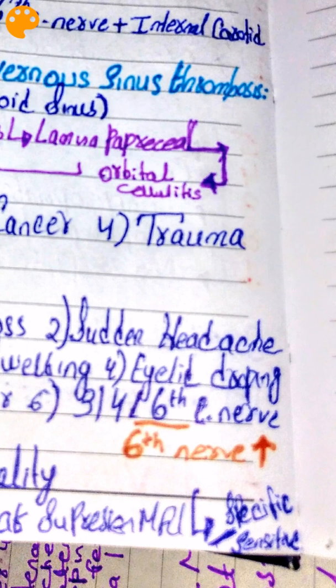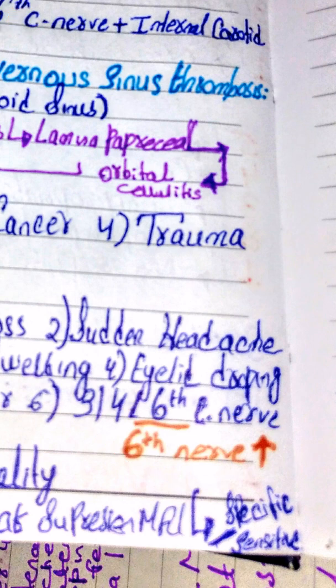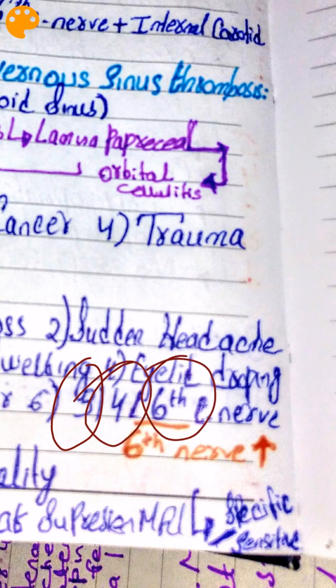The sixth cranial nerve is usually involved more than any other cranial nerve. As a result, the patient is unable to move the eyeball medially, laterally, or inferiorly. The third cranial nerve controls medial movement of the eyeball, the sixth controls lateral movement, and the fourth cranial nerve supplies the superior oblique, so the patient is unable to move the eyeball inferiorly.